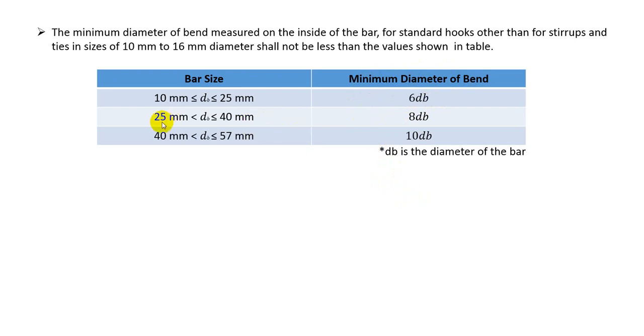Here, if the bar size, I mean our inside bar or for standard hooks and other straps, for 25mm, I mean the bar diameter are greater than 25mm and smaller than or equal to 40mm, then the minimum diameter of band will be sorry, 8 dB, 8 times of the used bar diameter.